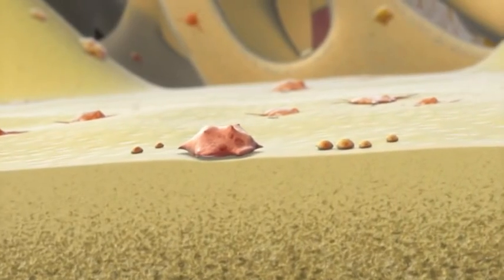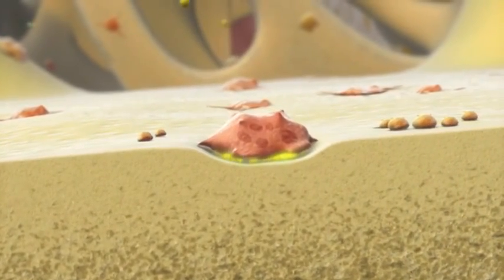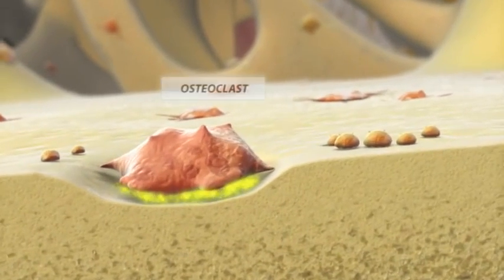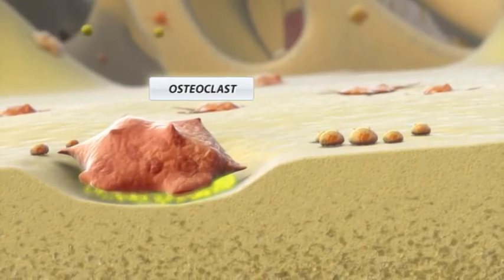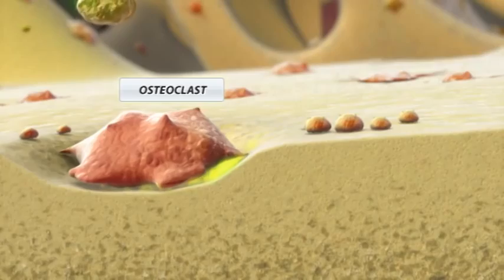In the skeleton, the osteoclasts are responsible for bone resorption. When osteoclast activity is too high, this will lead to too low bone mass and fragile bones. This is called osteoporosis. Therefore, osteoclastic activity must be controlled.